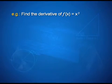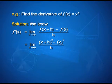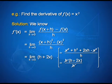Another example: find the derivative of f(x) = x². We know f'(x) = limit of f(x+h) minus f(x) divided by h as h tends to 0, which equals limit of (x+h)² minus x² upon h as h tends to 0. Expanding using (a+b)² = a² + 2ab + b², and simplifying, we have limit of h + 2x as h tends to 0, which equals 2x.